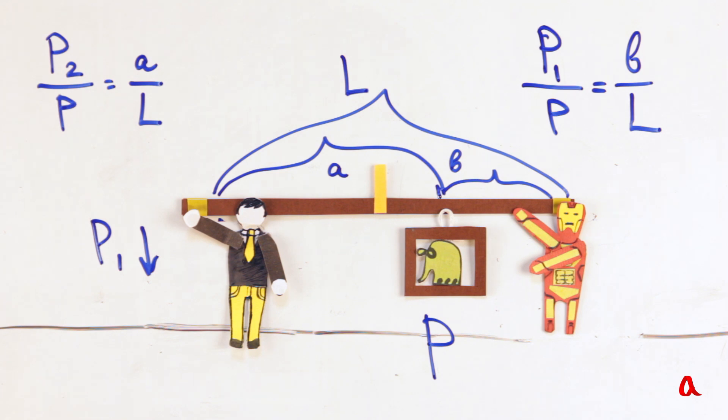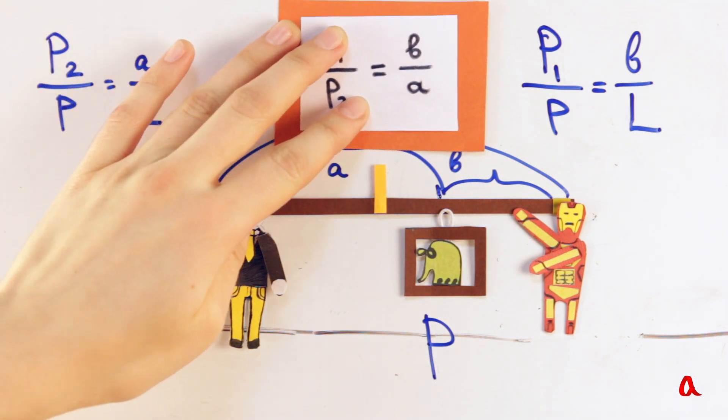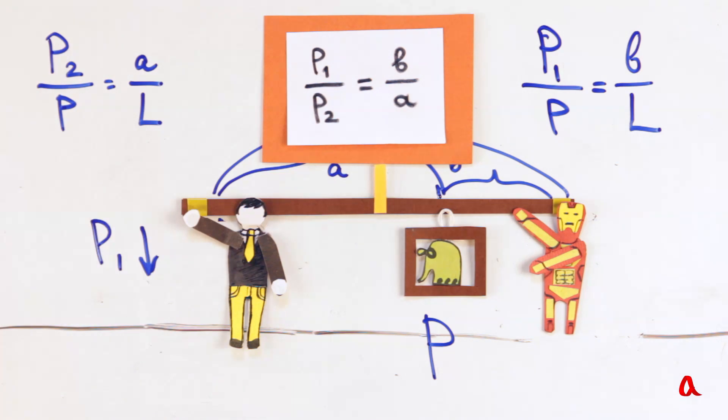Let's put back the second person and see what we've got. Dividing the second ratio term by term by the first one, we find that the P1 loading relates to the loading P2 in the same way as arm B relates to arm A.